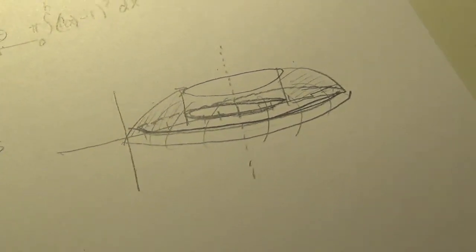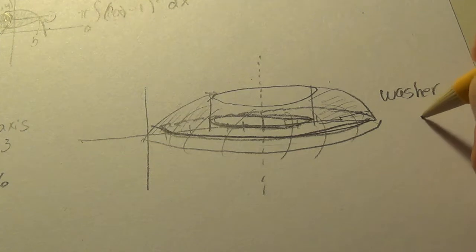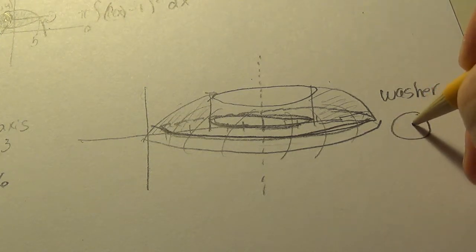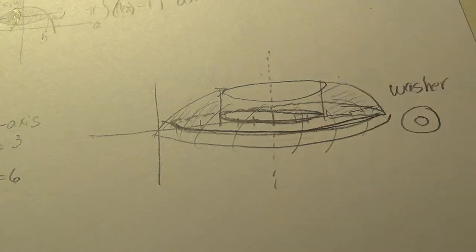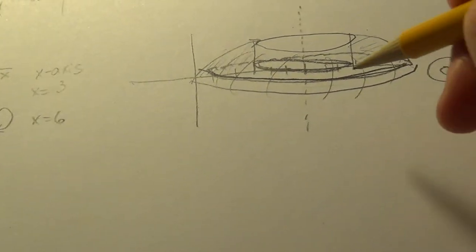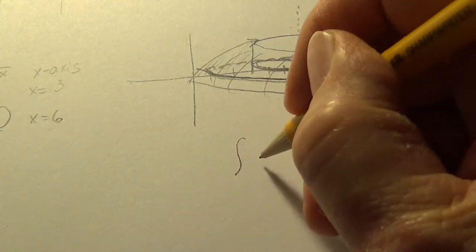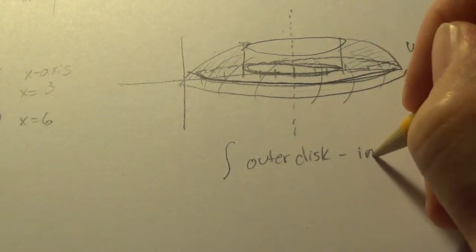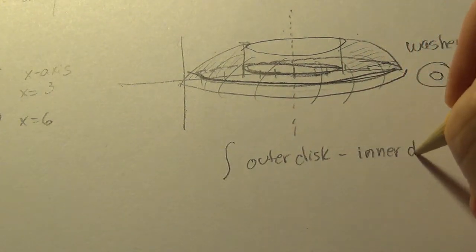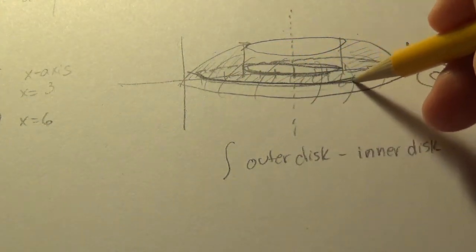So this method is called the washer method. And washers are like little tools that have a hole in them. So that's how it looks like a washer. So to get the area or the volume, we are going to do the integral of the outer disc minus the inner disc.